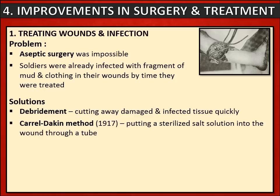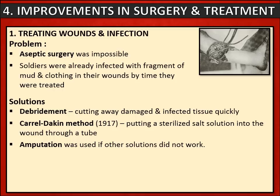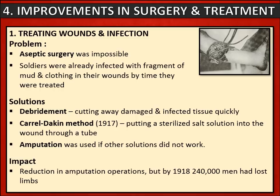They did develop a method during World War One called the Carrel-Dakin method, used more widely from 1917. This meant putting a sterilised salt solution into the wound through a tube to try and keep the wound clean. There were issues though — unfortunately the solution would only last for about six hours and had to be made when needed, which could be really difficult especially when large numbers of wounded men needed treatment at the same time. However, amputation was still used if no other solution worked. As the war wore on there was a reduction in amputation operations, but by 1918, 240,000 men had lost limbs and so infection continued to be a bit of an issue.